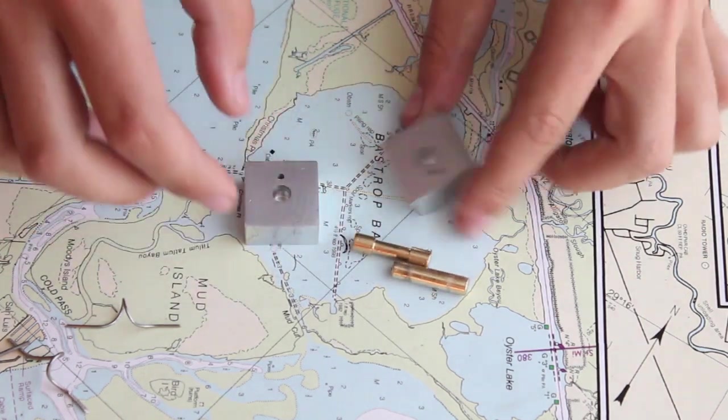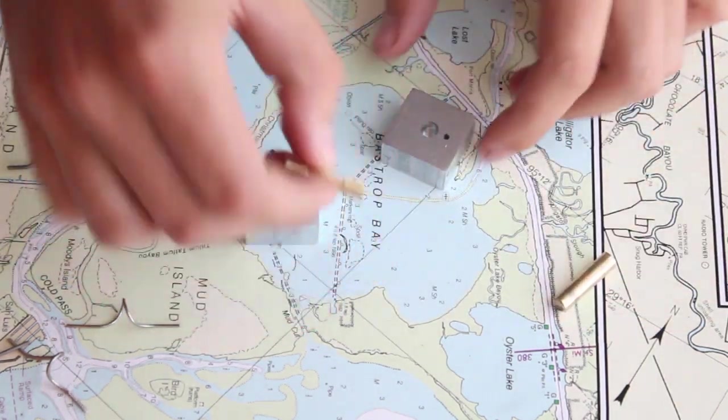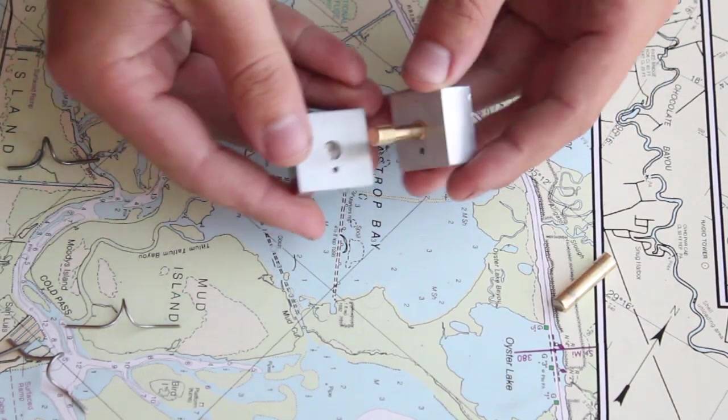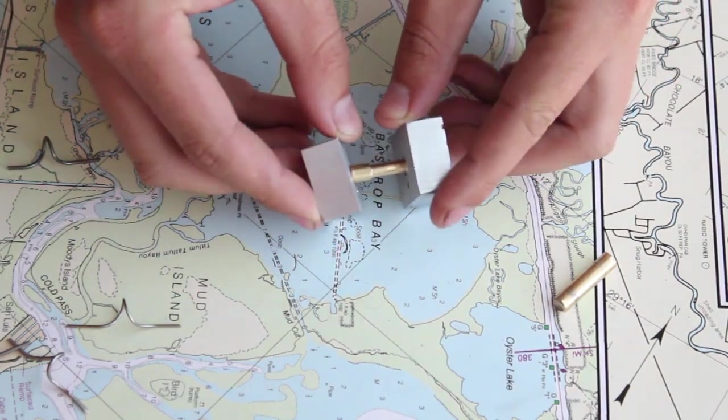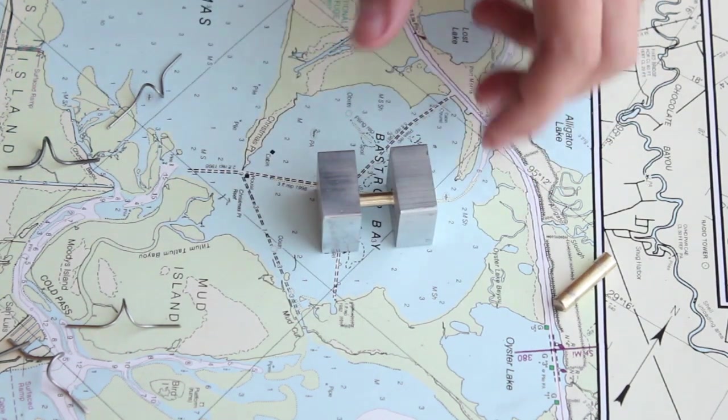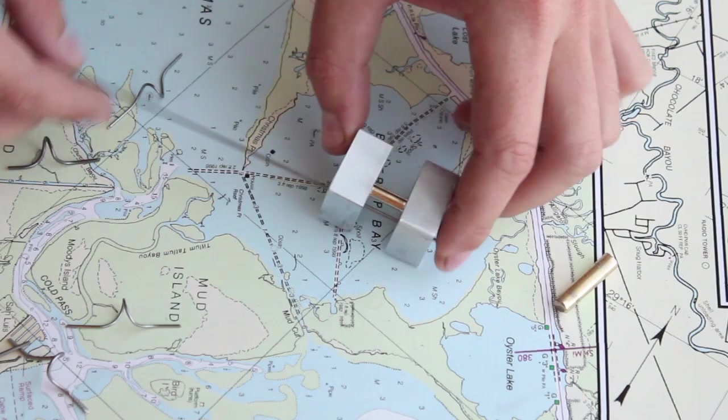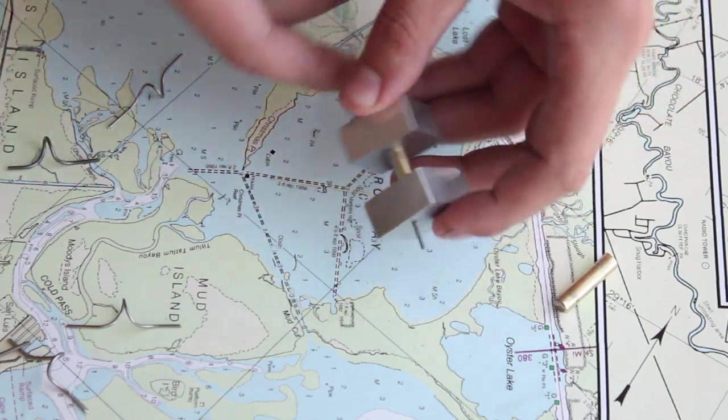Forming the guides is pretty simple. Select the center shaft you want to use, and assemble the end blocks around it. Next, pass the stainless steel spring wire through the holes, leaving some excess hanging out of both ends.